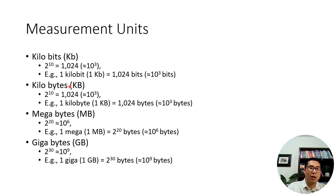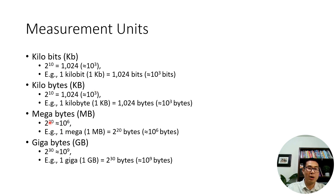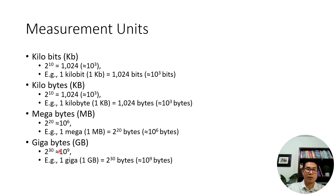We also have kilobytes, written as KB with an uppercase B, equal to 2 to the power of 10 bytes — approximately 10 to the power of 3 bytes. A megabyte is 2 to the power of 20, approximately 10 to the power of 6 bytes. A gigabyte is about 2 to the power of 30, or approximately 10 to the power of 9 bytes.